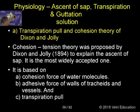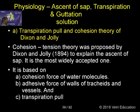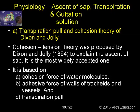This we have already discussed. Cohesion tension theory was proposed by Dixer and Jolly to explain the ascent of sap. It is the most widely accepted one. It is based on the cohesion force of water molecules, the adhesive force of walls of tracheids and vessels, and a transpiration pull. All three together function in the ascent of sap.